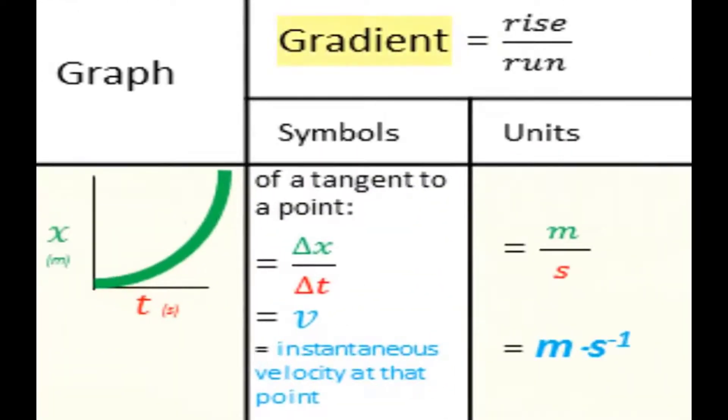So we've seen that the gradient of a tangent to a point in a position-time graph gives us the instantaneous velocity at that point in time.